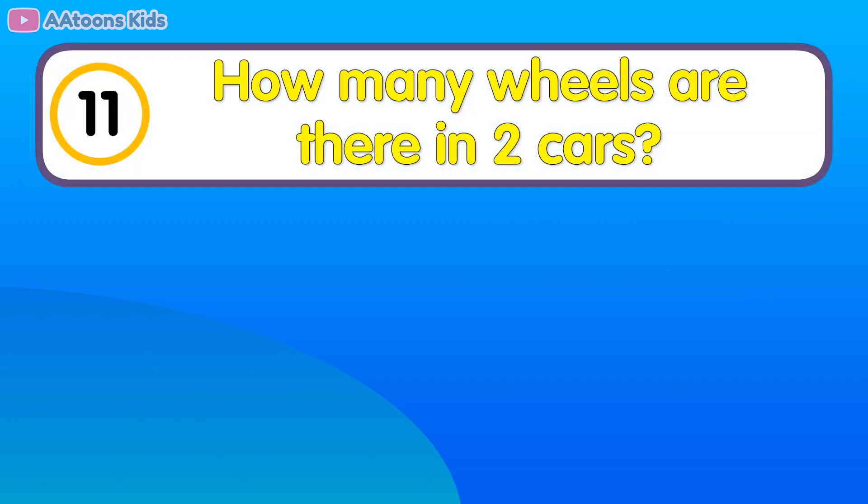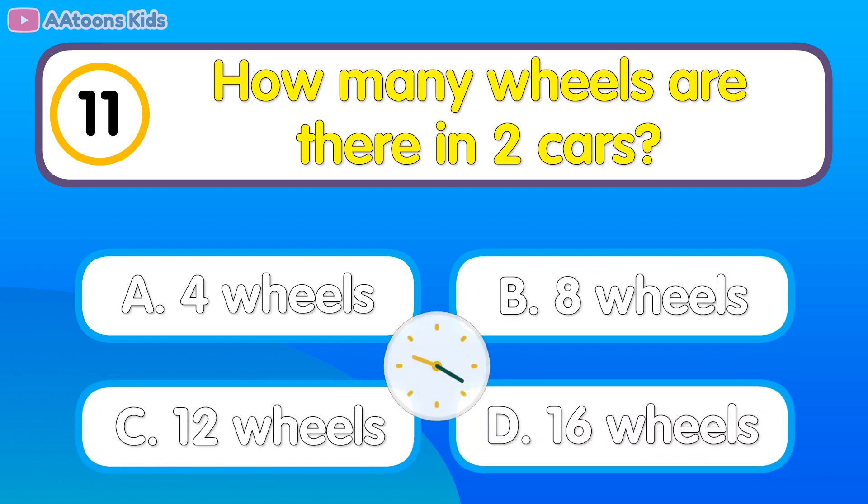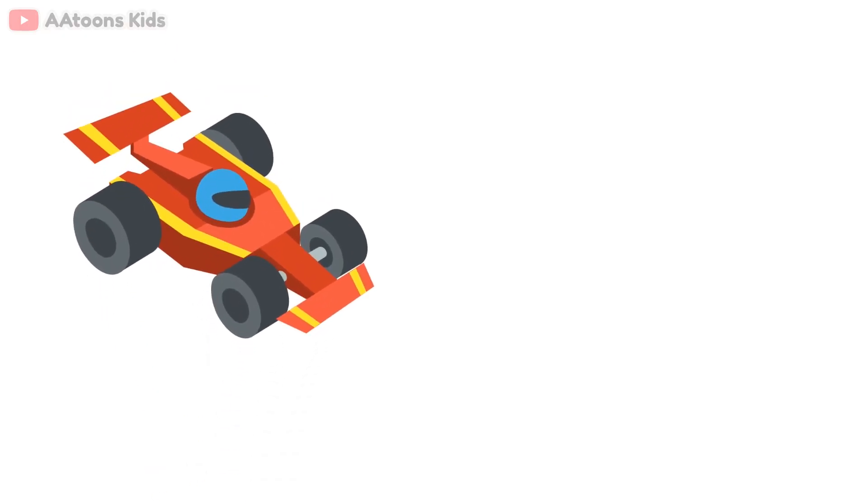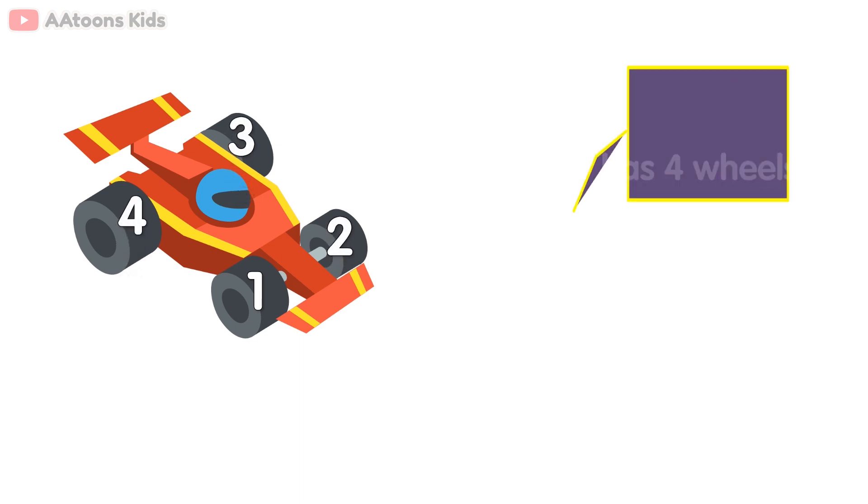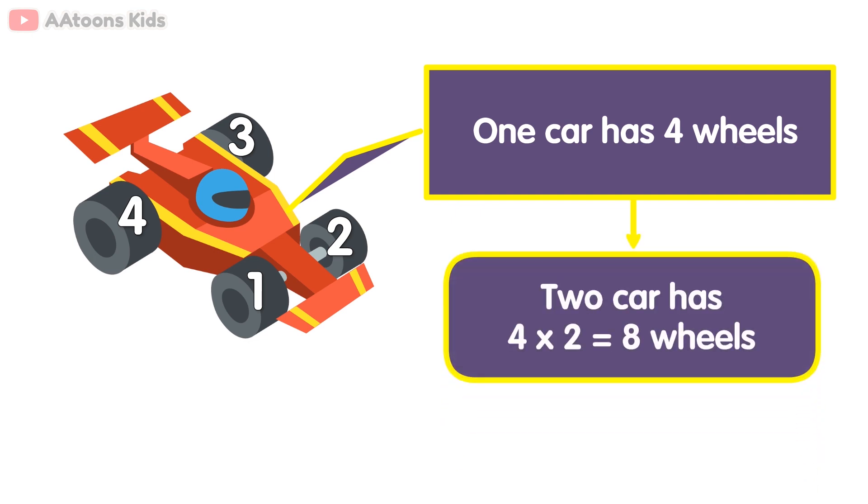How many wheels are there in 2 cars? 8 wheels. A car has 4 wheels: 1, 2, 3, 4. 1 car has 4 wheels. 2 cars have 4 multiplied by 2, which equals 8 wheels.